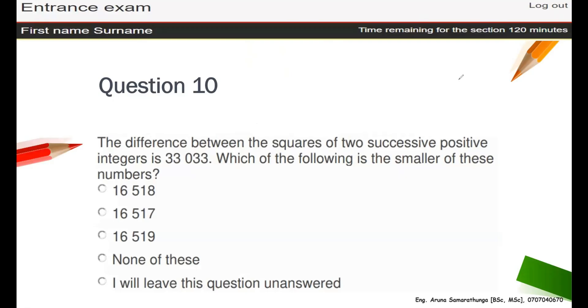Square means this kind of thing. The difference between the squares of two successive positive integers. Positive integer means these things: one, two, three, four, like that. Which of the following is the smaller of these numbers? Now what is this saying? The difference between the squares of two successive, that means the near positive integers. So let's go to the other side, then I can explain.